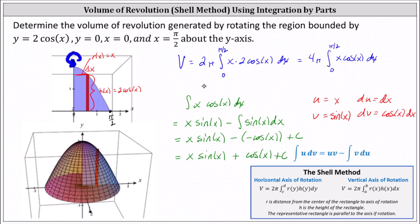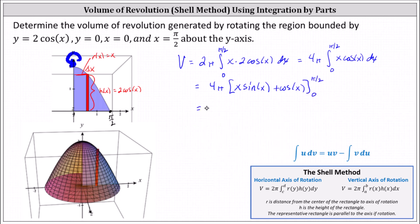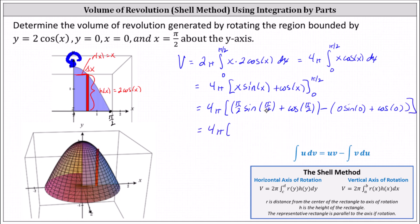Now we can evaluate the definite integral. We need to determine 4 pi times F of pi divided by 2 minus F of 0, where F of x is x sine x plus cosine x. F of pi divided by 2 is pi divided by 2 times sine of pi divided by 2 plus cosine of pi divided by 2. And then minus F of 0, which is 0 times sine 0 plus cosine 0. Sine pi divided by 2 equals 1, and cosine pi divided by 2 is 0, so F of pi divided by 2 simplifies to pi divided by 2. Sine 0 is 0 and cosine 0 is 1, so F of 0 simplifies to 0 plus 1.